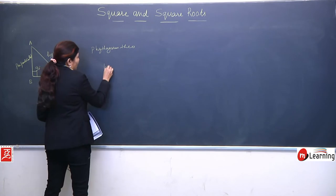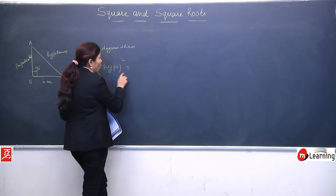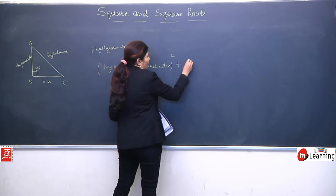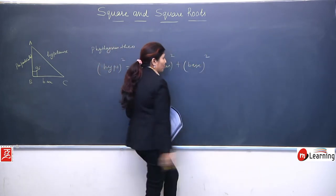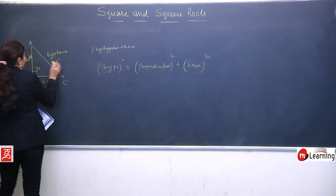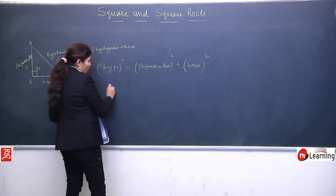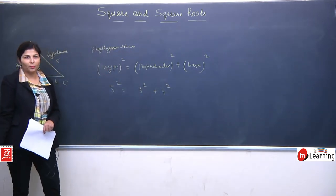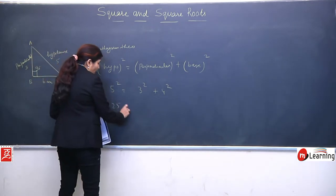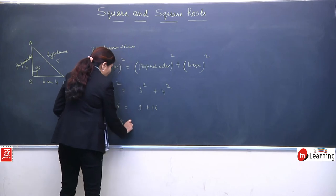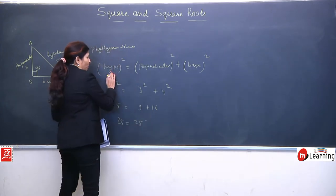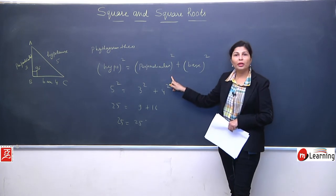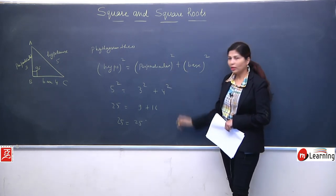Pythagoras theorem says: if we are having a right angle triangle, then hypotenuse square is always equal to perpendicular square plus base square. Means whatever value the hypotenuse is given, like it is 5, this is 3 and this is 4, so 5 square is always equal to 3 square plus 4 square. We'll add them.